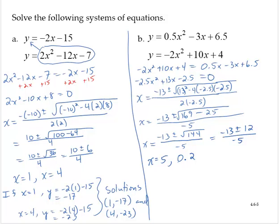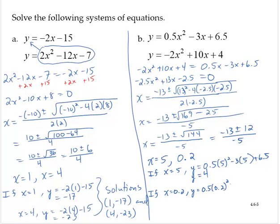Substituting to find the y values: if x equals 5, y equals 0.5 times 5 squared minus 3 times 5 plus 6.5. Using a calculator, y equals 4. If x equals 0.2, y equals 0.5 times 0.2 squared minus 3 times 0.2 plus 6.5, which comes to 5.92. So the solutions of the system are (5, 4) and (0.2, 5.92).